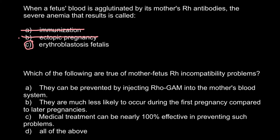Let's go over each answer. Answer A: They can be prevented by injecting RH0-GAM into the mother's blood system. This abbreviation stands for antibodies, and these antibodies would be produced by people who are RH-negative — that means homozygous negative, with genotype RH-minus/RH-minus. When such a person receives a small amount of blood from an RH-positive person, their immune system would start to produce antibodies. If we take these antibodies and inject them into the blood system of a pregnant female...